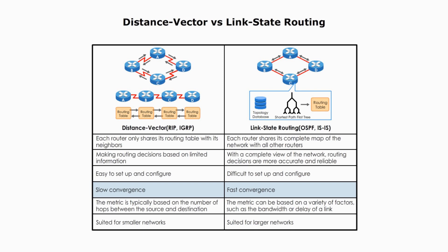Let's talk about the concept of convergence, because it's important when we talk about routing protocols. Convergence is the process by which all devices in the network come to agree on the best route to a given destination. In distance vector routing, convergence can be slow because each device only has limited information about the network and must rely on periodic updates from its neighbors. In contrast, link state routing protocols use a more efficient flooding algorithm to exchange routing information, which allows for faster convergence.